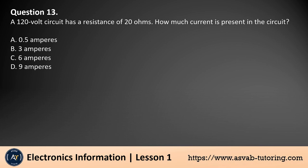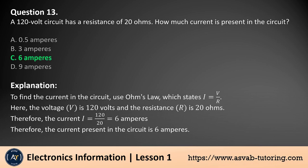Question 13. A 120-volt circuit has a resistance of 20 ohms. How much current is present in the circuit? a. 0.5 amperes, b. 3 amperes, c. 6 amperes, d. 9 amperes. The answer is c. To find the current in the circuit, we use Ohm's law, which states the current equals the voltage divided by the resistance. Here, the voltage V is 120 volts and the resistance R is 20 ohms. Therefore, the current present in the circuit is 6 amperes.